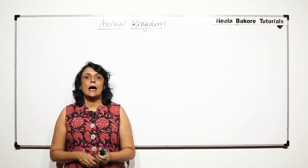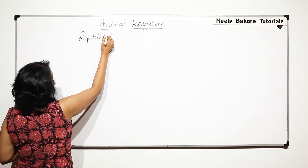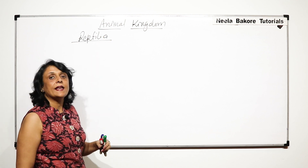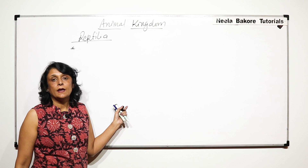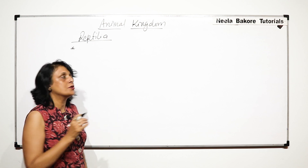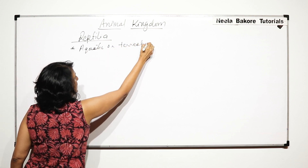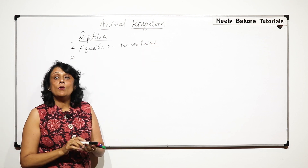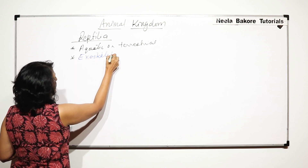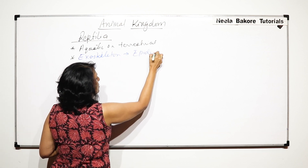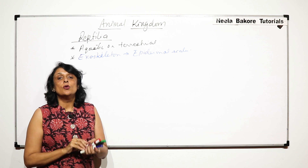In this video we'll talk about another class that is Reptilia. In Reptilia we'll first take up the general characteristic features and then we'll take some important examples. Reptiles they can be aquatic or terrestrial. Their skin is covered with exoskeleton, so exoskeleton in them is made up of epidermal scales.